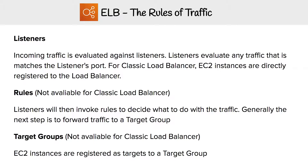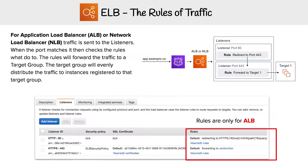Let's quickly just summarize what these things are, and then see them in context with some visualization. Listeners listen for incoming traffic and evaluate it against a specific port, whether that's port 80 or 443. Then you have rules, and rules can decide what to do with traffic. Then you have target groups, which is a way of collecting all the EC2 instances you want to route traffic to in logical groups. So let's go take a look first at application load balancer and network load balancer.